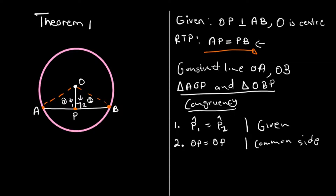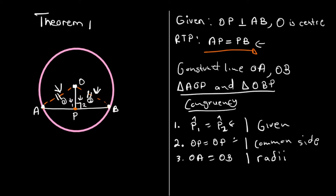The third thing we can prove is that OA is equal to OB. If you check OA and OB, they are the radii from the center to the circumference and from the circumference to the center, so they are equal — this side here equals that side here. So now you've proven three things: you've proven the angle, the side, and the side.